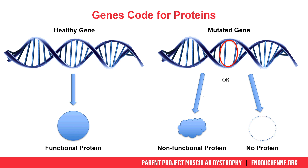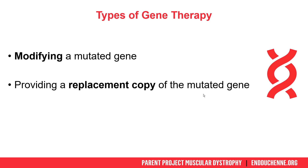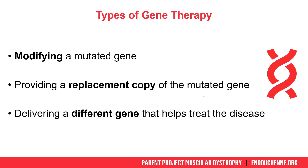Gene therapy is a way to treat a disease by changing gene expression, and this can be accomplished in a few different ways. The mutated gene can be modified in the cell, different cells can have a replacement copy of that mutated gene provided, or other genes that might be able to help treat the disease may be used in place of providing a replacement copy. When we think about Duchenne, which is caused by the DMD gene not making a functional dystrophin protein, we may want to correct the mutation in the DMD gene through gene editing, provide a new functional copy of the Duchenne gene, or deliver a different gene that can help treat the clinical presentation of the disease.